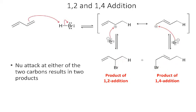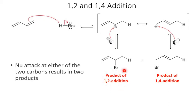When people talk about electrophilic addition reactions, they talk about 1,2 and 1,4 addition. The 1,2 adduct is where the hydrogen added to carbon 1 and the bromine added to carbon 2. The 1,4 adduct is where the hydrogen added to carbon 1 and the bromine added to carbon 4. That's where those terms — 1,2 addition and 1,4 addition — come from.